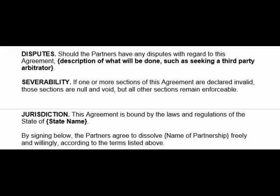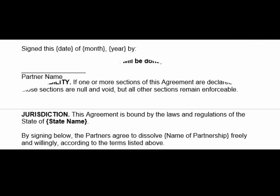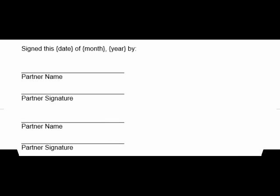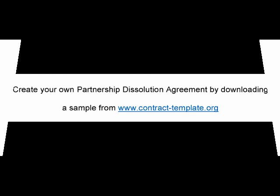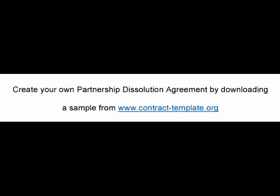It can also happen that one party simply notifies the other about the severance, just because it was not working according to the agreed rules and regulations. The dissolution agreement template places binding over both parties as they now have to agree with the rules of the agreement once again. Create your own partnership dissolution agreement by downloading a sample from www.contract-template.org.